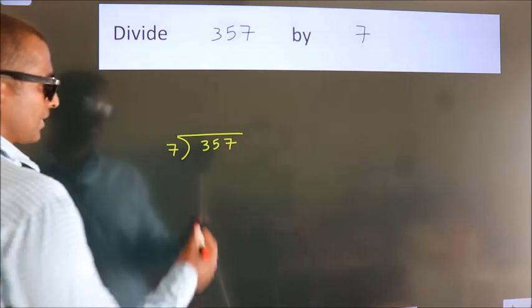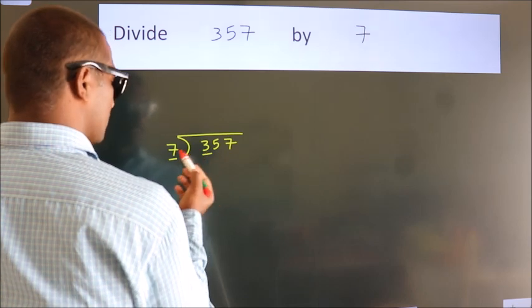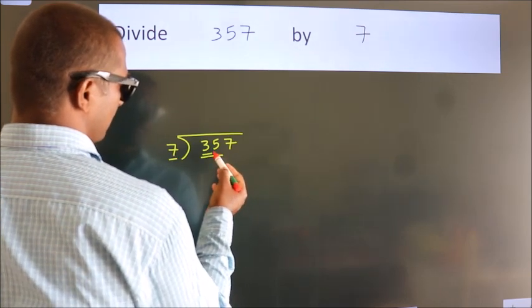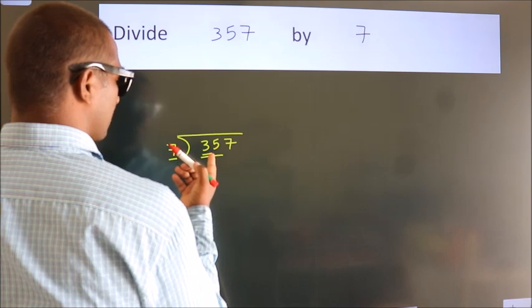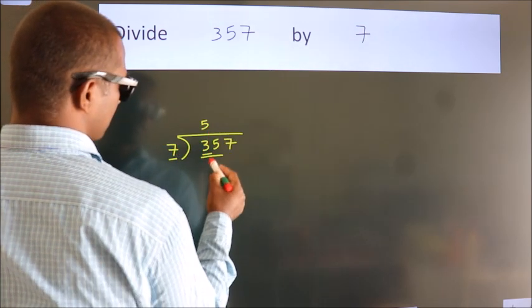Next, here we have 3. Here 7. 3 is smaller than 7, so we should take 2 numbers: 35. When do we get 35? In 7 table. 7 fives, 35.